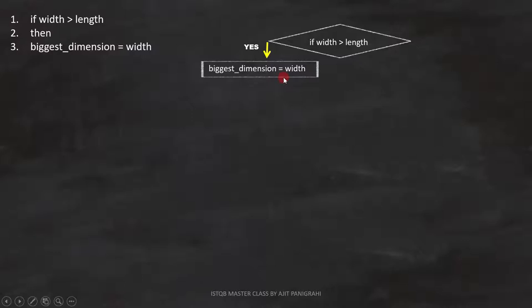Now let's analyze line 4. If height is greater than width, we have to continue with the same branch. And since it is a condition, we have to represent it like this.